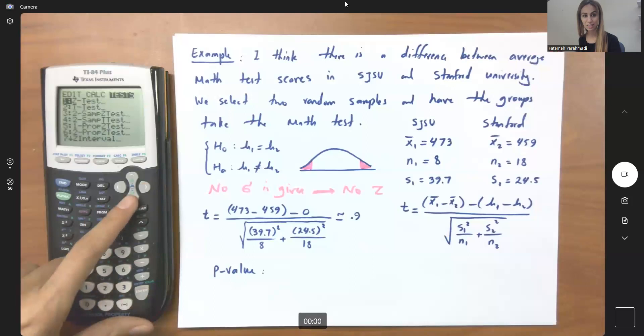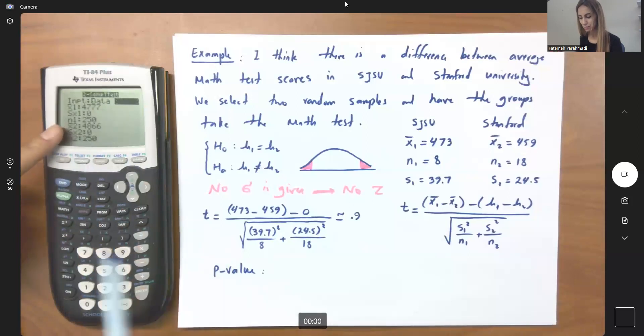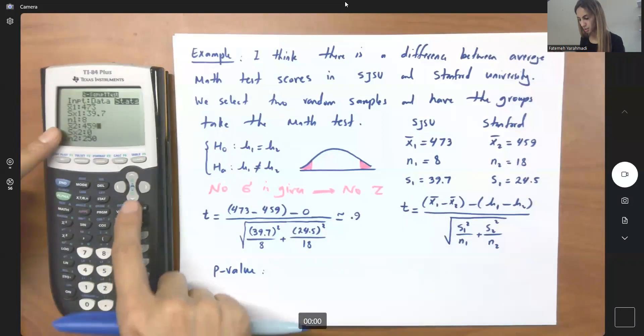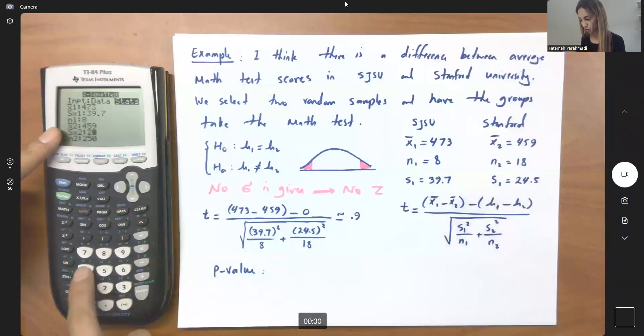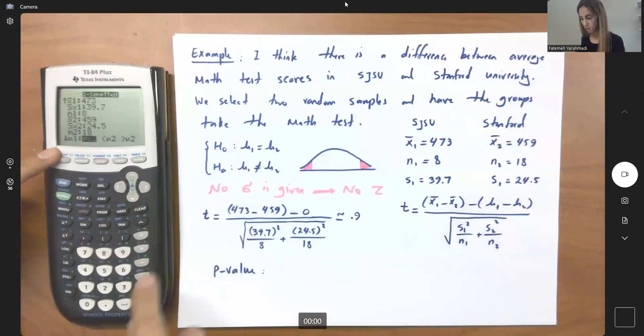And since I don't have any sigma, I'm going to use t test with two sample, two sample t test. I don't have the actual data. I have the information from my sample. So let me punch these numbers into our calculator. The x1 bar is 473 and the standard deviation of the first sample is 39.7 and n1 is 8. Let us go to x2, x2 bar 459, then we have s sub x2, which is 24.5, and then I have 18 students here.